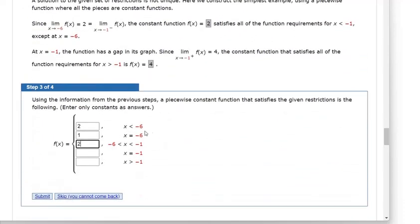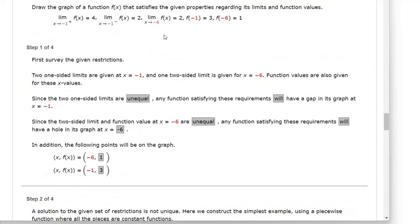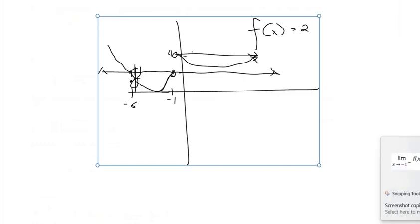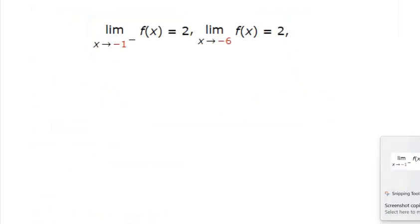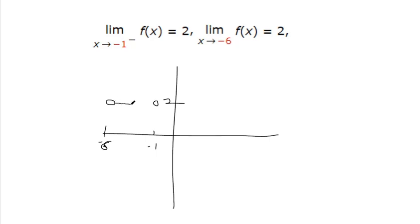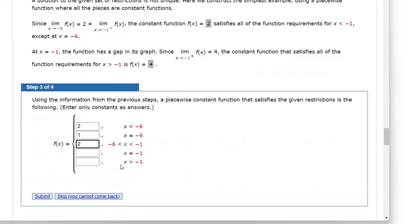I'll draw that graph. We're thinking about x values between negative 6 and negative 1. As x approaches negative 6, the y value should be 2. As x approaches negative 1 from the left, the y value should also be 2. We don't know exactly what's happening in between, but both those limits equal 2, so as you approach negative 1 from the left the y values are 2, and as you approach negative 6 from the right, the y values are also 2.